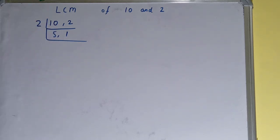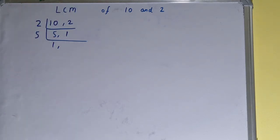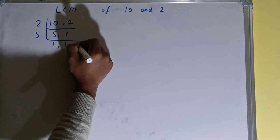So we'll go to the next prime number, that is 5. The first number is divisible by 5, so we'll divide. This 5 will become 1, and this 1 is not divisible by 5, so we'll just copy this down. Once we get 1 comma 1, we need to stop.